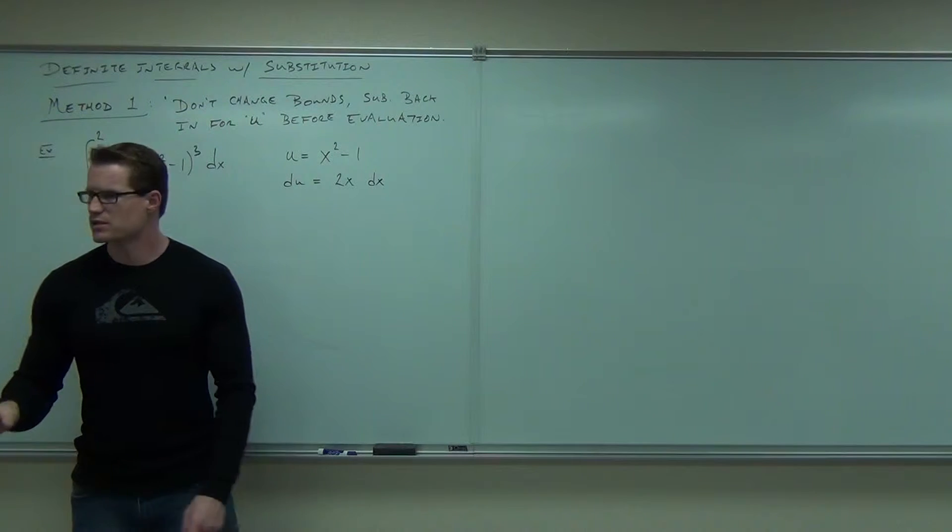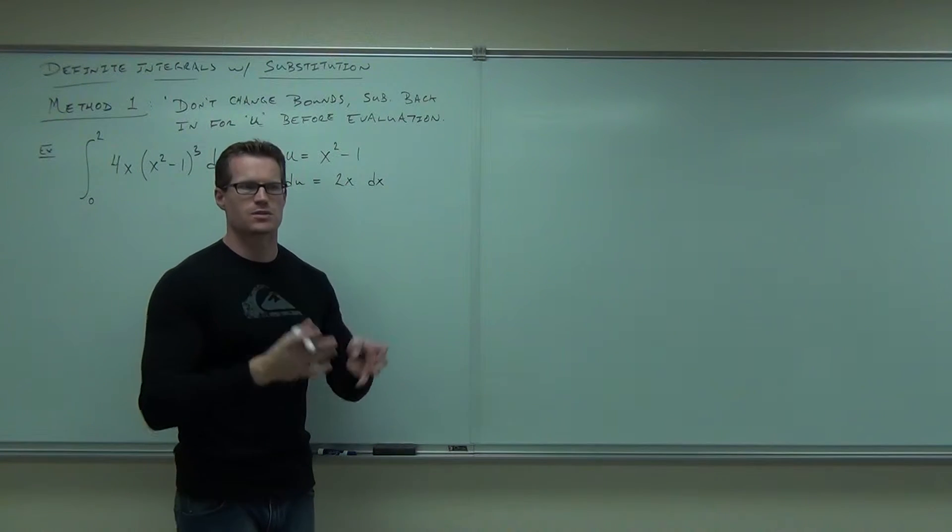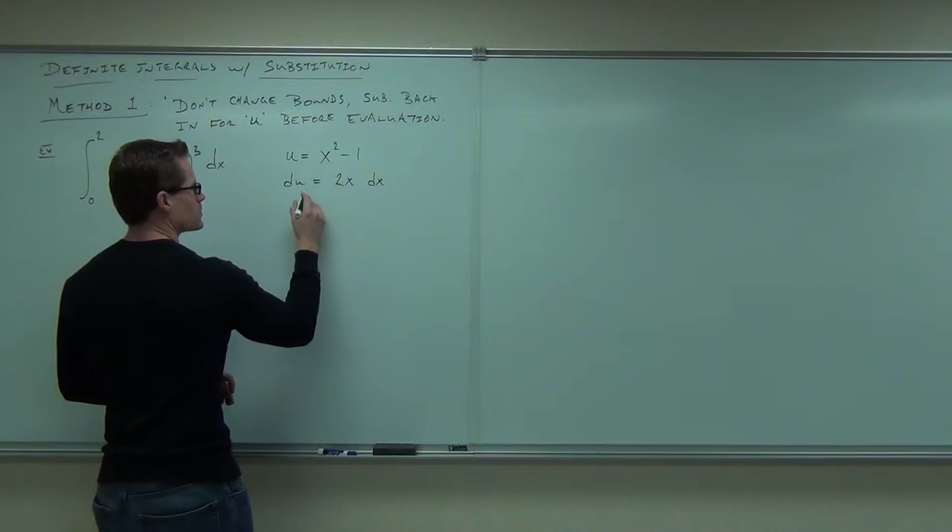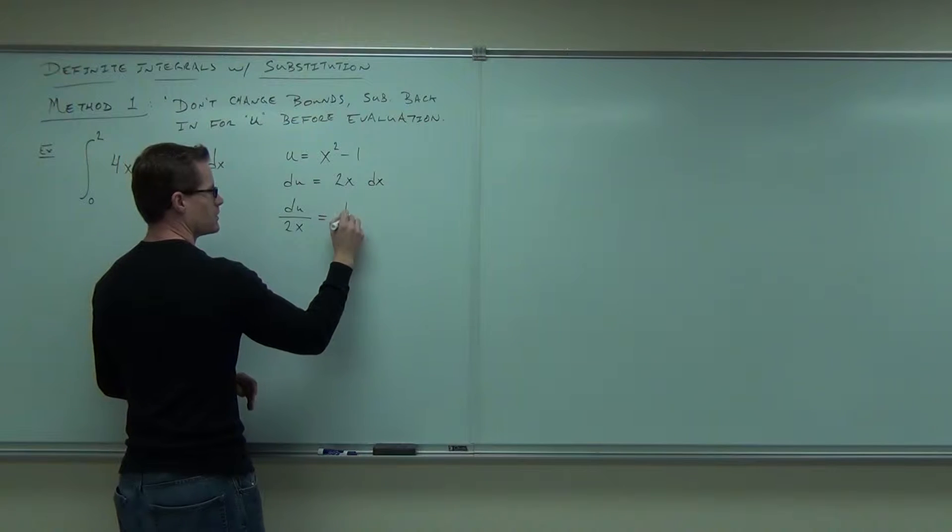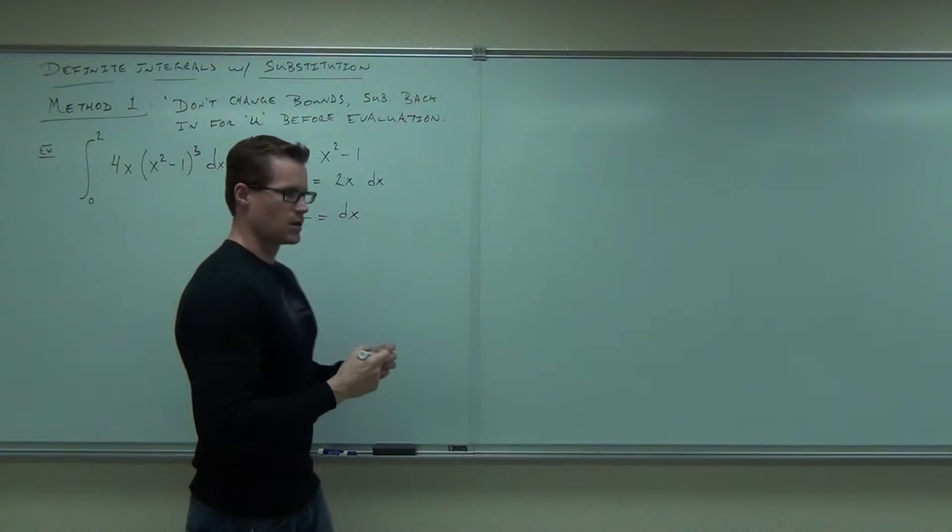And then how I've taught you how to do this is I've had you solve for dx. That makes a substitution nice and neat. So to solve for dx, you're going to get du over 2x equals dx. Are you okay with this so far?